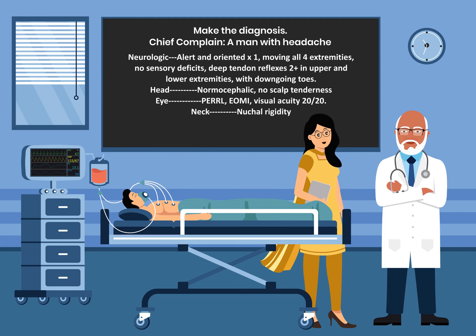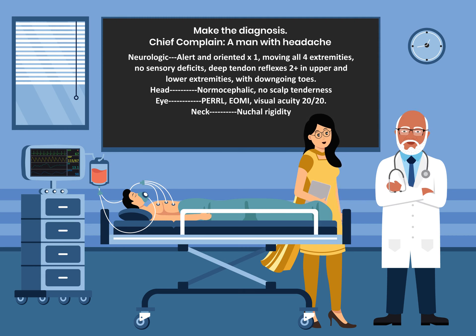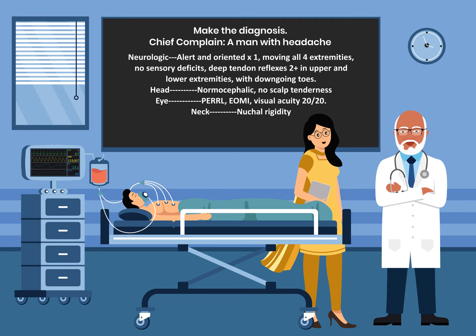The neurologic examination reveals a patient who is alert and oriented times one, moving all four extremities with no sensory deficits. Deep tendon reflexes are 2-plus in both upper and lower extremities with downgoing toes. The head shows no scalp tenderness, and pupils are equal, round, and reactive to light with extraocular muscles intact and visual acuity of 20/20.